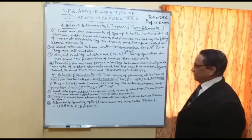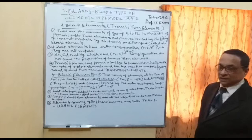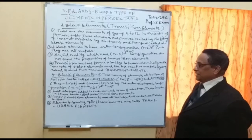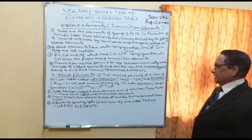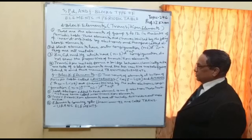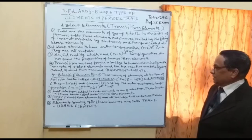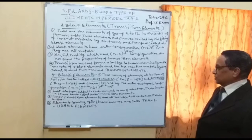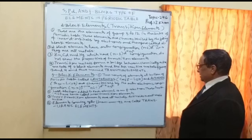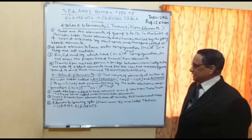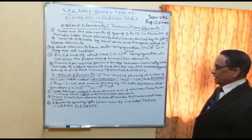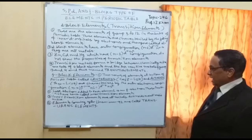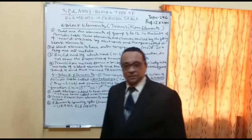Two rows of elements at the bottom of the periodic table are called lanthanoids (Ce, 58 to Lu, 71) and actinoids (Th, 90 to Lr, 103). They are characterized by the outer electronic configuration (n-2)F1–14 (n-1)D0–2 S2. The last electron added to each element is an F electron. These two series are called inner transition elements and are all metals. Actinoids are all radioactive. Elements coming after uranium-92 are all called trans-uranic elements.